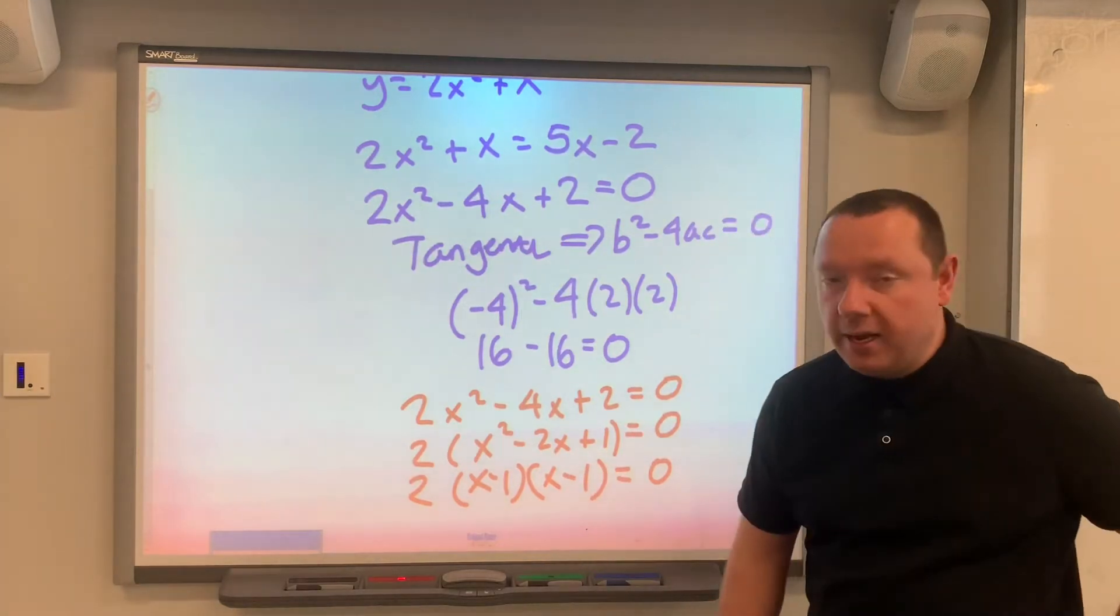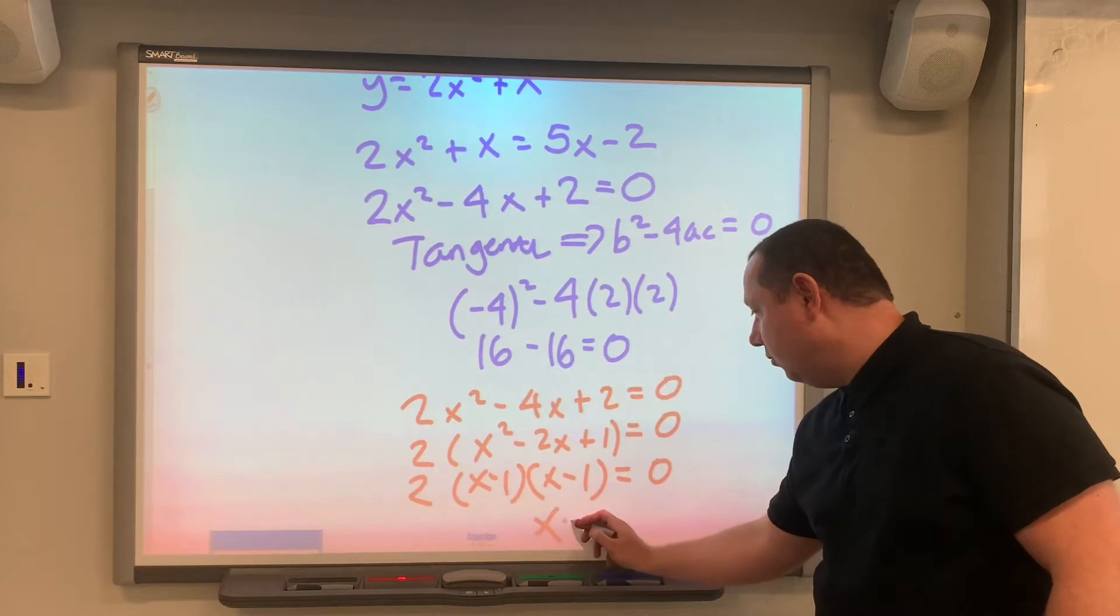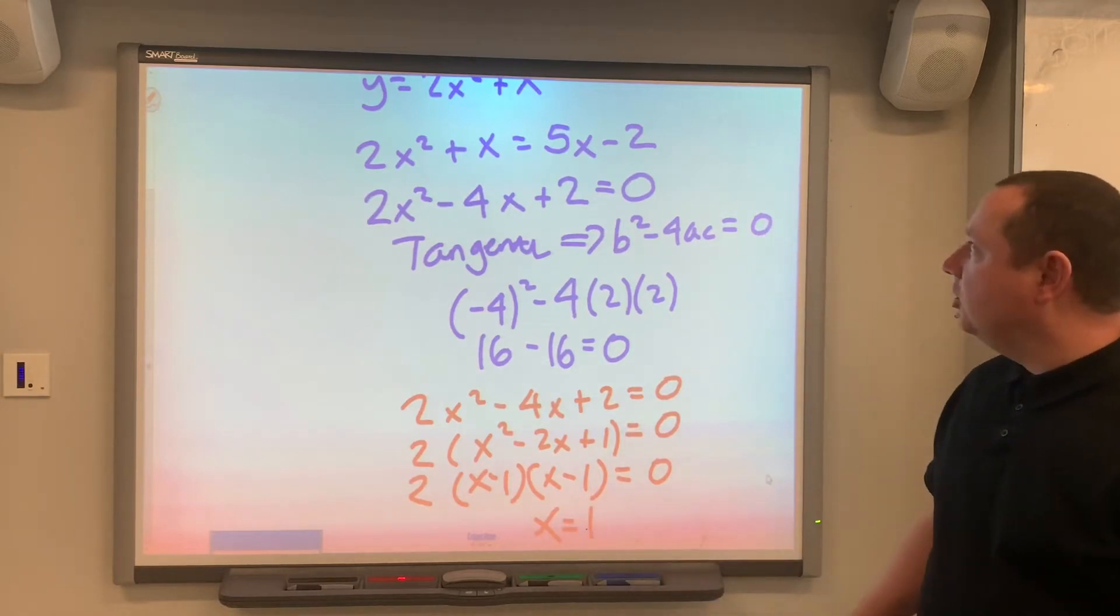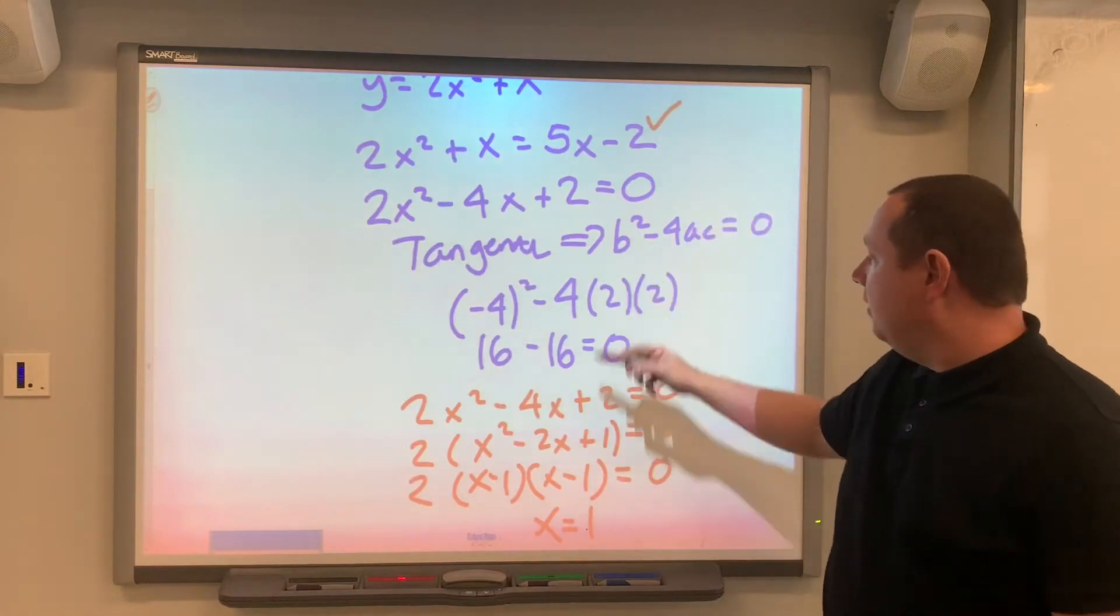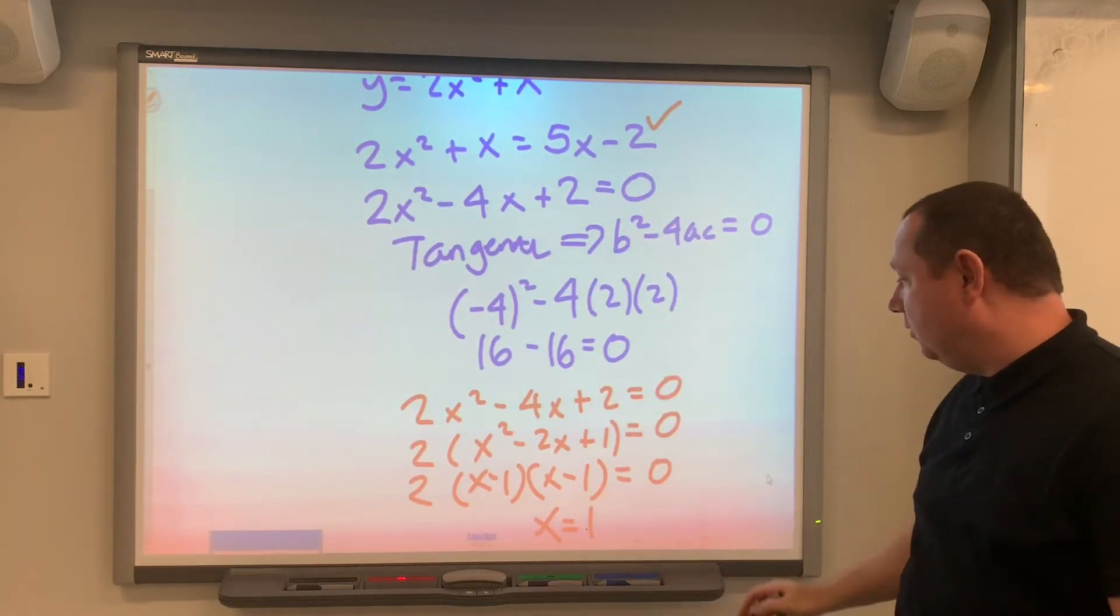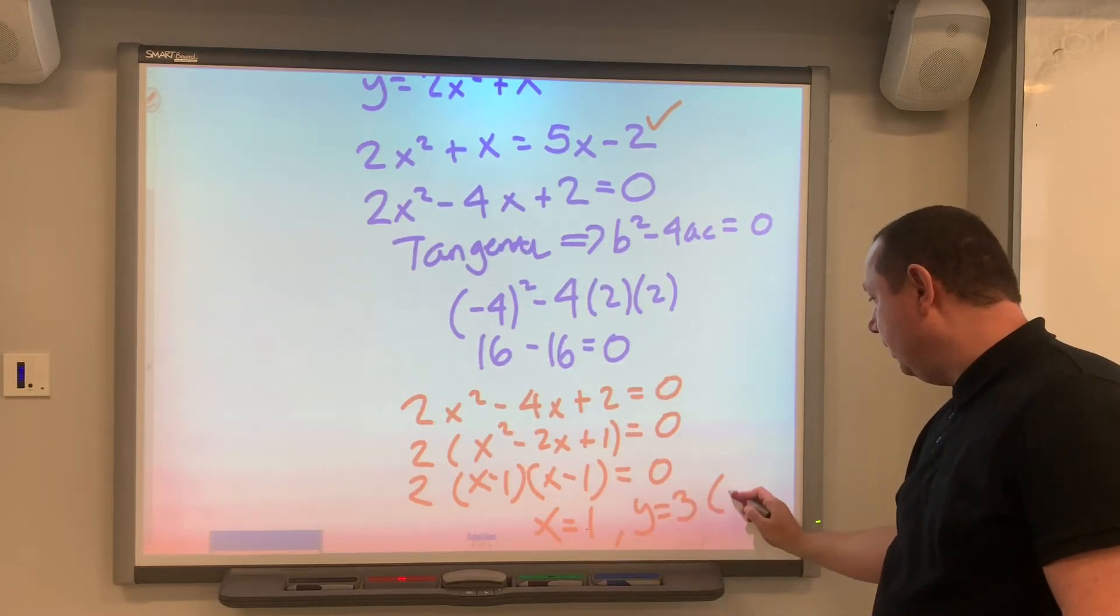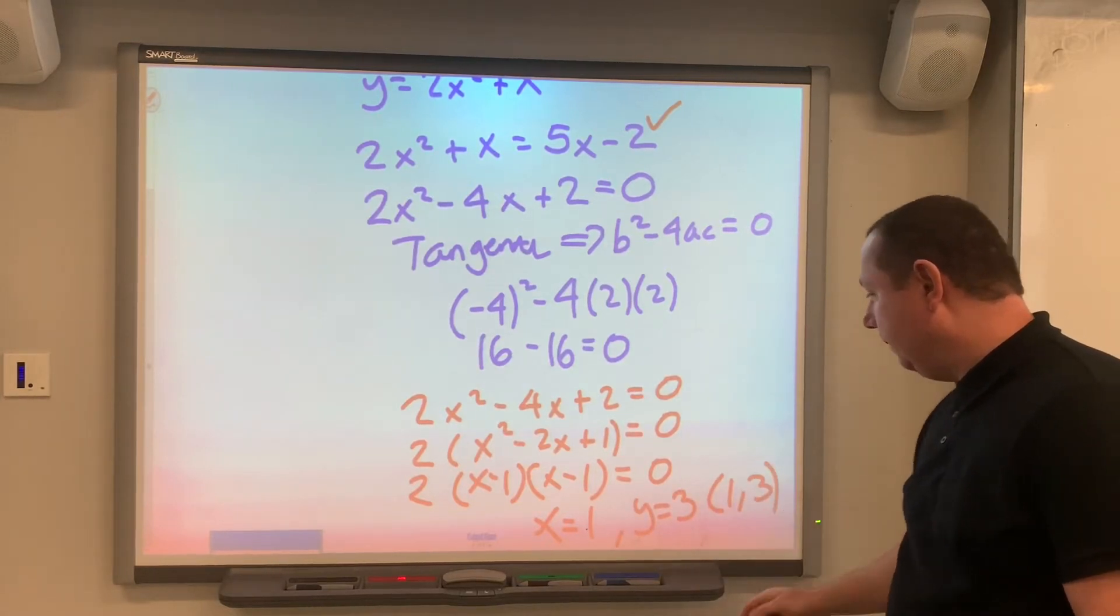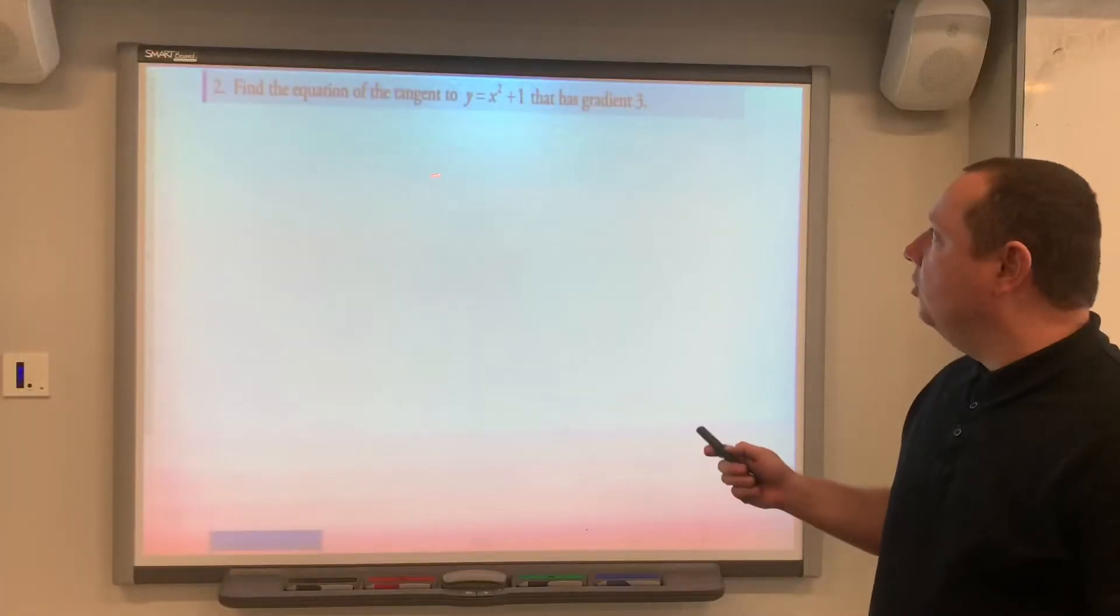Repeated root, which we should expect because the discriminant is equal to zero. So the root occurs at x equals 1. Substituting that back into the original equation, we can just use this one. 5 times 1 is 5, minus 2 is 3. Y equals 3. The point of contact is (1, 3). Nice and simple and straightforward.